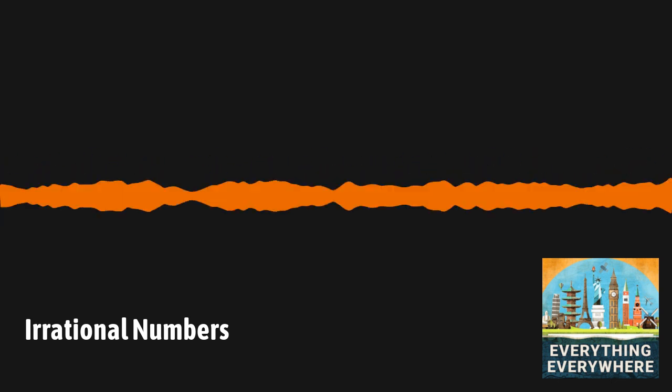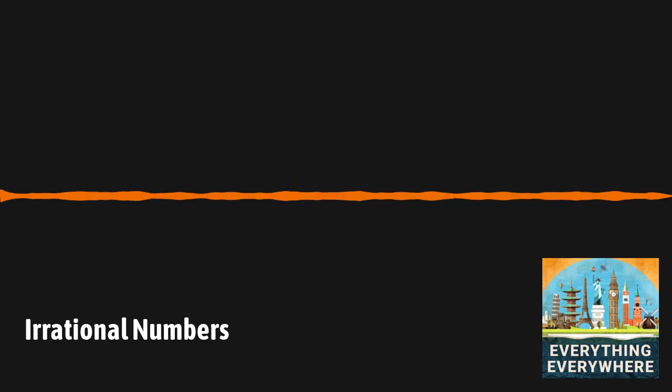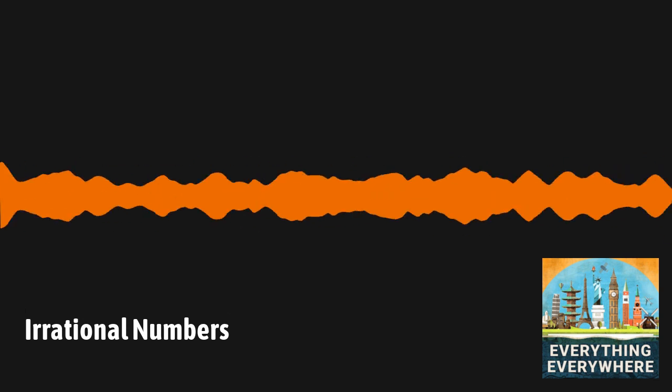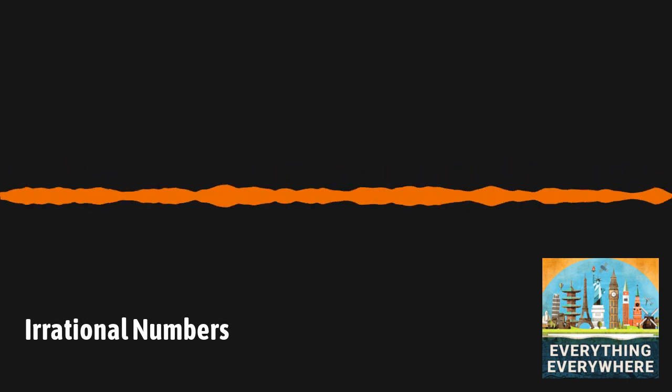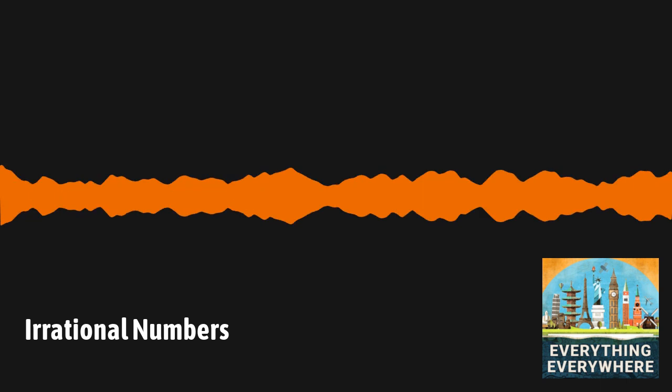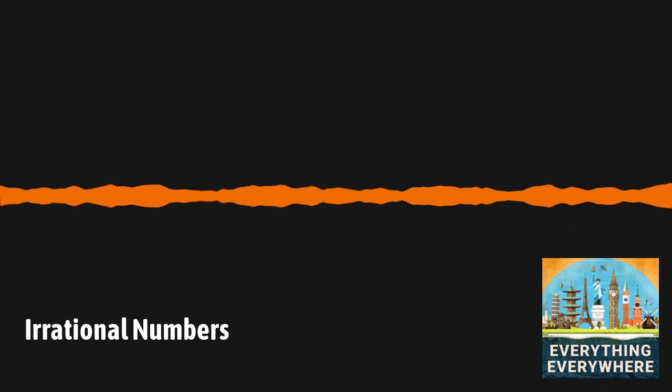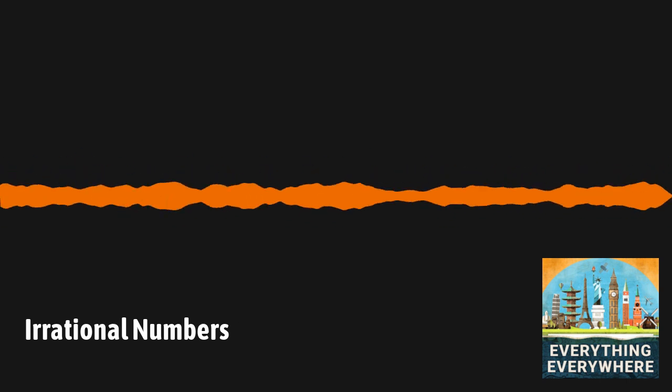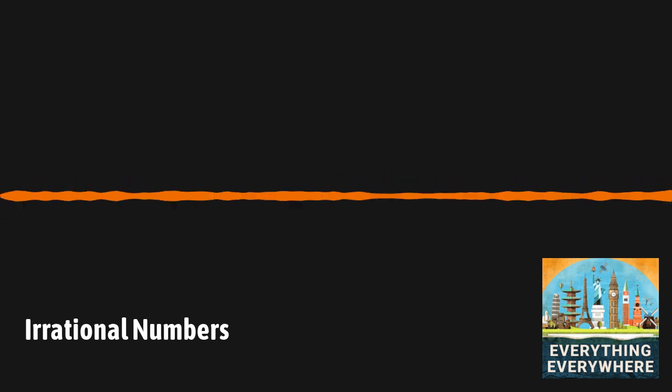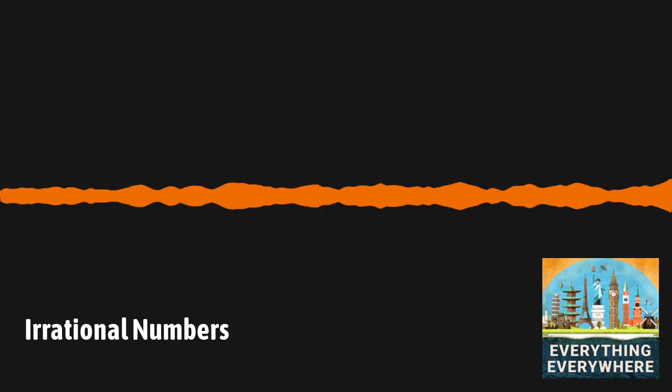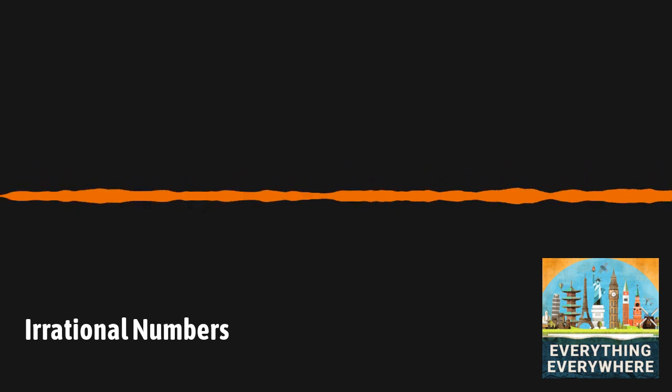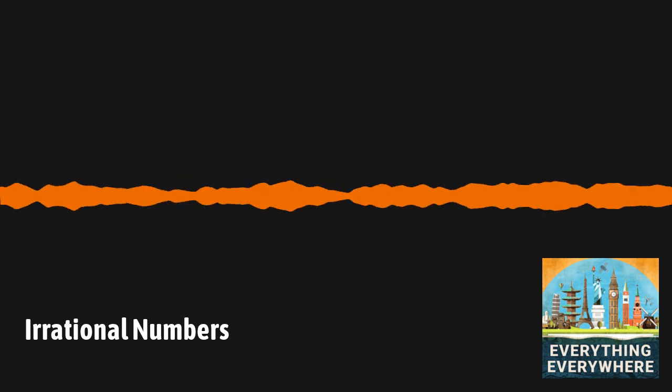Another irrational number that pops up almost everywhere, even in things like art and nature, is phi. Phi is the Greek symbol used to express the golden ratio. The golden ratio is an irrational number with an approximate value equal to 1.61803. And it also can be expressed algebraically as 1 plus the square root of 5, all divided by 2.